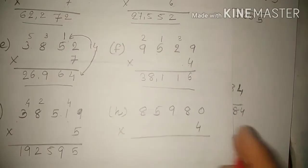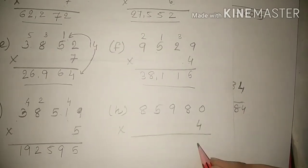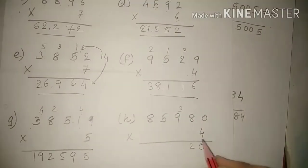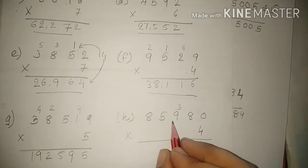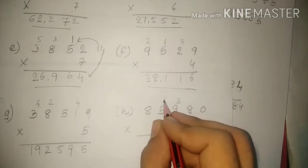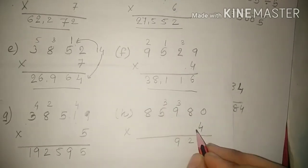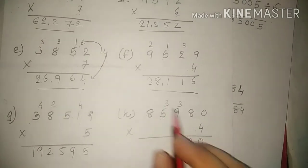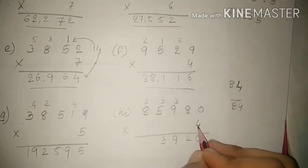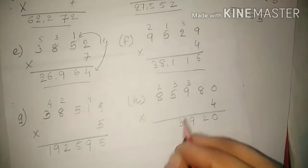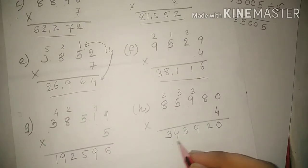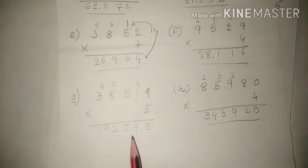Let's do the next sum, students. 4 zeros are 0. 4 eights are 32. 4 nines are 36, 36 plus 3 is 39. 4 fives are 20, 20 plus 3 is 23. 4 eights are 32, 32 plus 2 is 34. This is your answer, students.